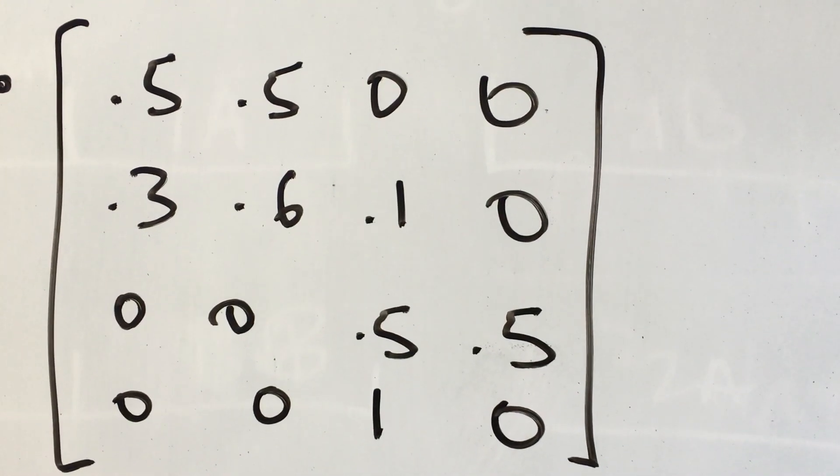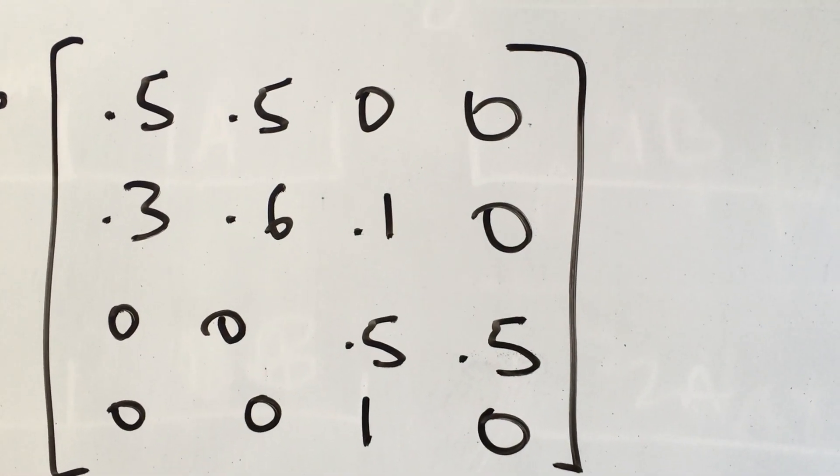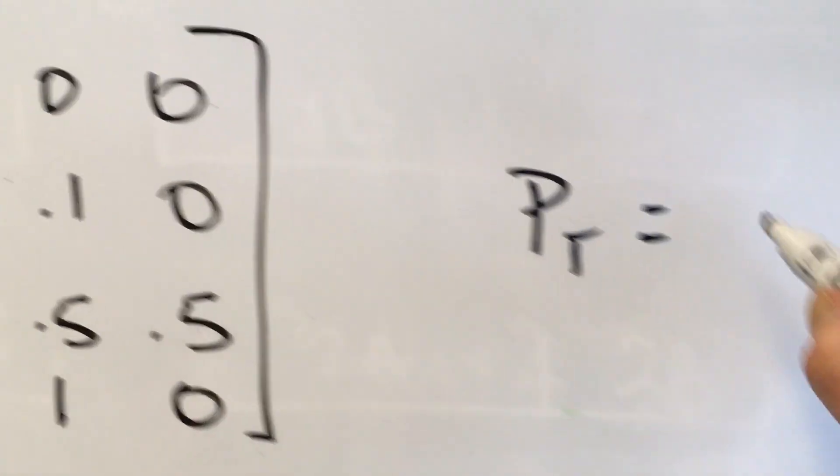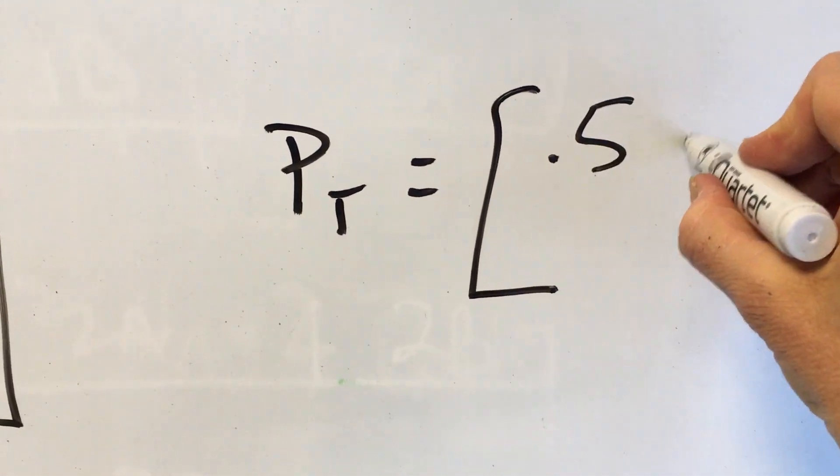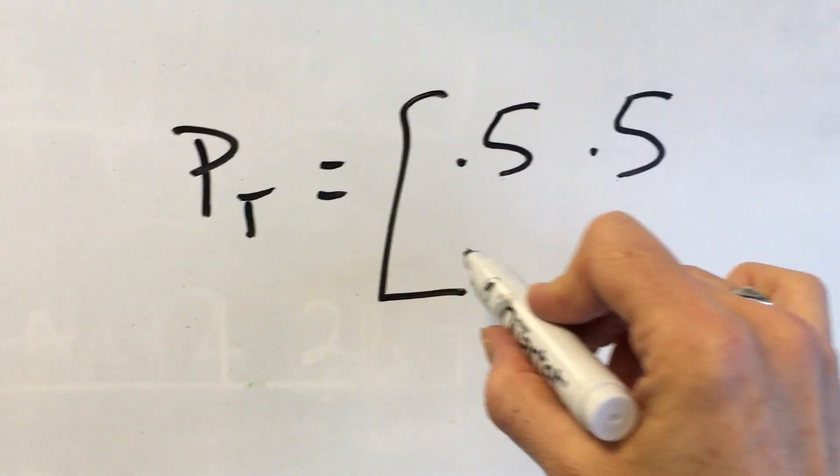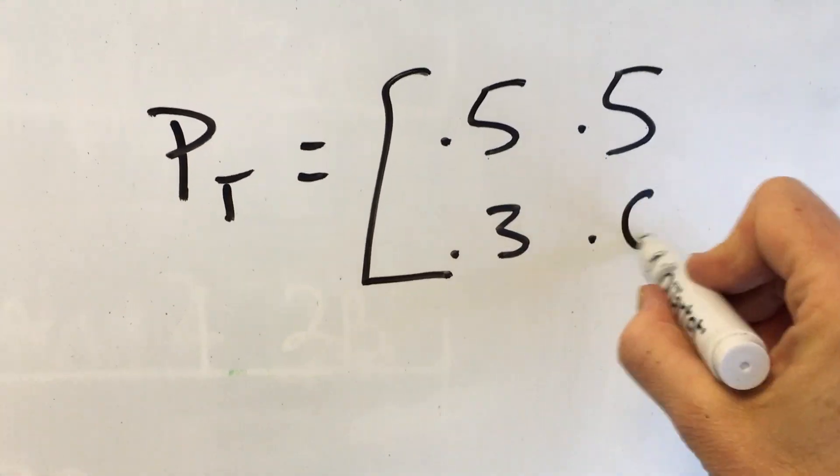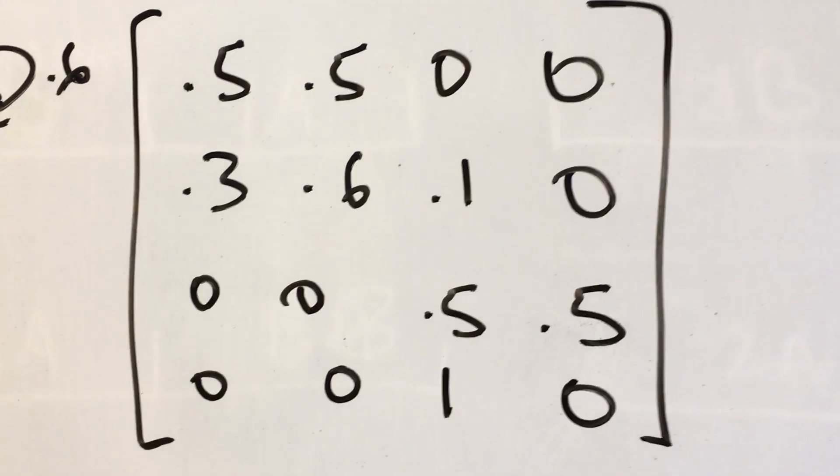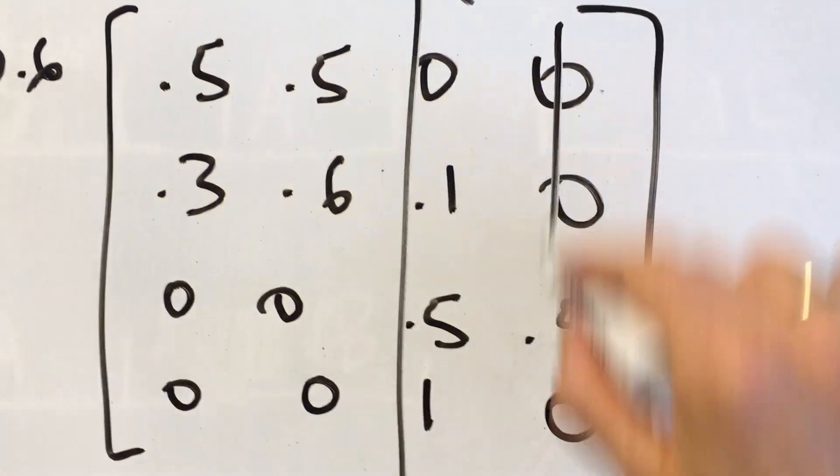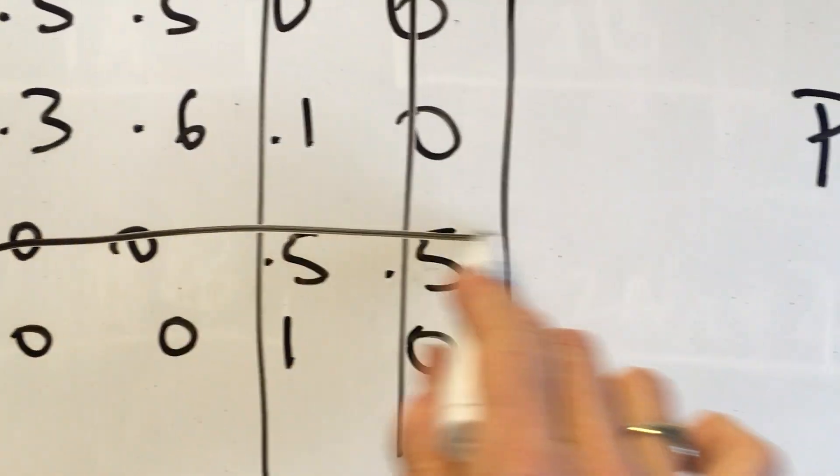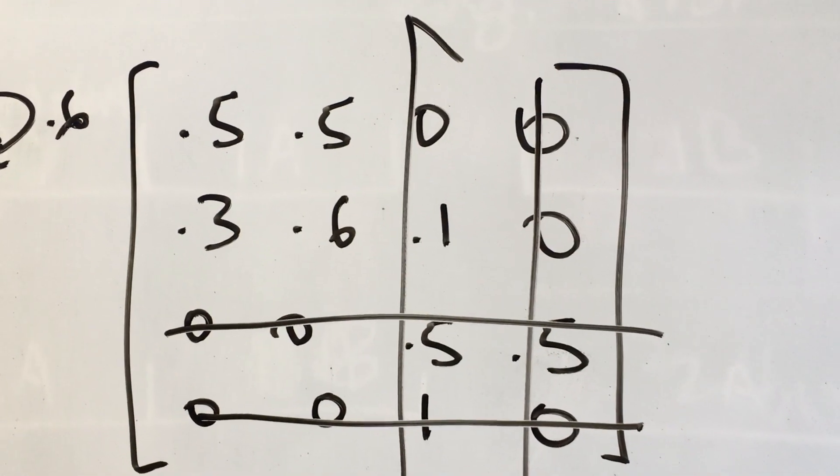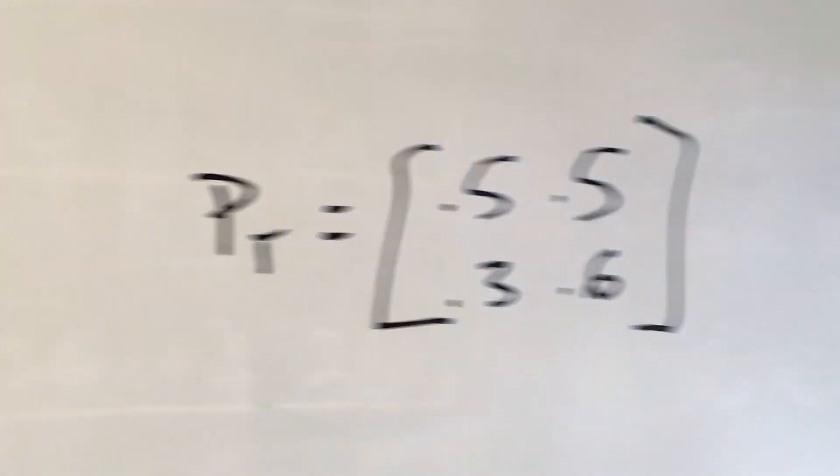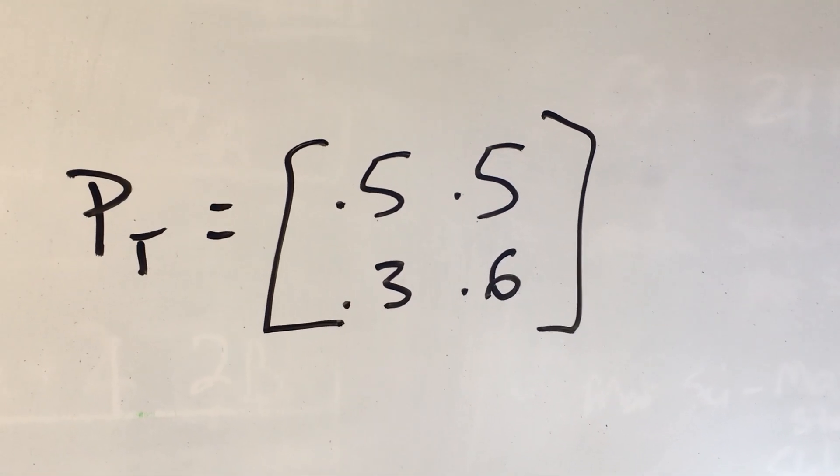So we're going to define our PT matrix as it's just the rows and columns that have to do with the transient states. So we've effectively stripped out everything having to do with the absorbing states. And we're just left with 0.5, 0.5, 0.3, 0.6, which is what we use for our transition matrix.